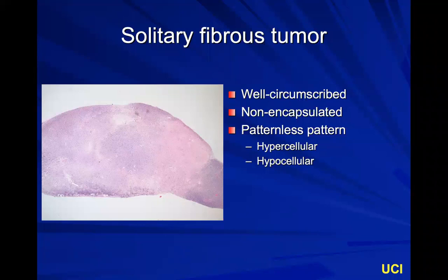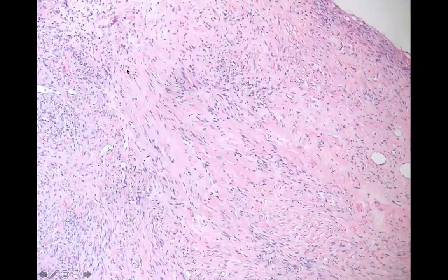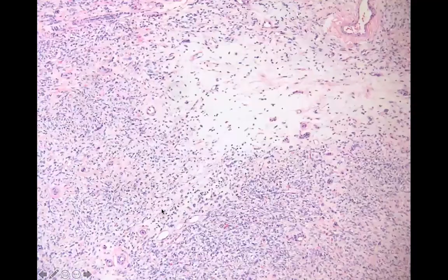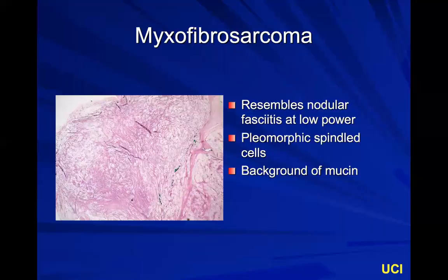A solitary fibrous tumor is a well-circumscribed but not encapsulated proliferation known for its patternless pattern — there's nothing distinct about it except how indistinct it is. You have hypercellular areas, hypocellular areas, very randomly arranged, all composed of spindled cells making collagen. Here's a medium cellular area, a very cellular area, and a hypocellular area — a patternless pattern in a well-circumscribed nugget.